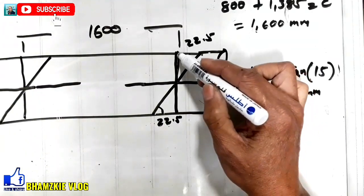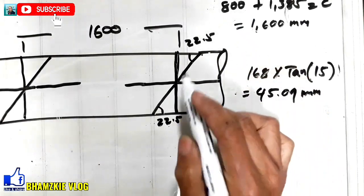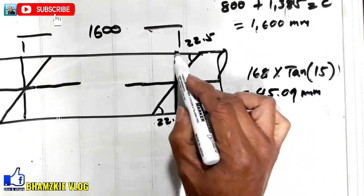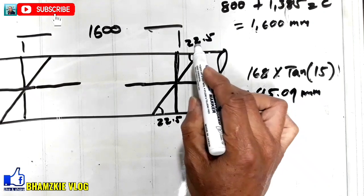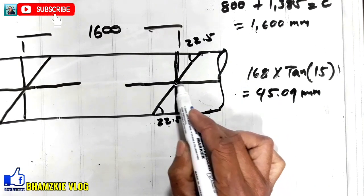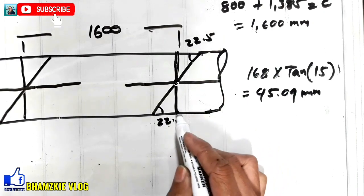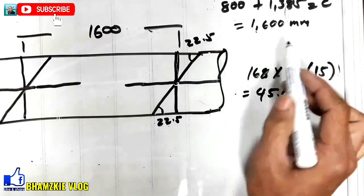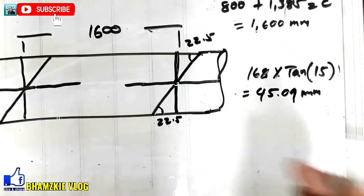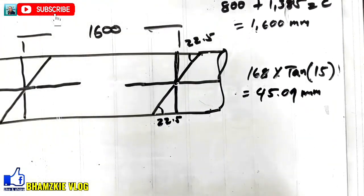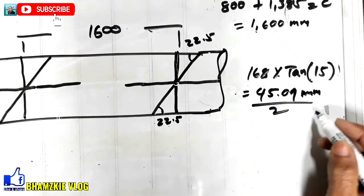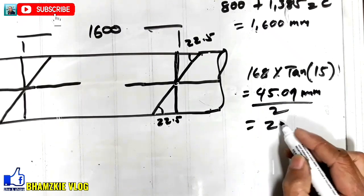Simula rito, i-rap around nyo yan para mayroong kayong reference sa pagkuhan ng measurement ninyo. Simula rito hanggang dito, yan ay yung kanyang 22.5. So, dito naman sa center, yan ay yung kanyang 0. Dito naman, kung dito sa right side is 22.5, dito sa left side is 22.5 din. So, divide 2 nyo yan is magiging 22.5.